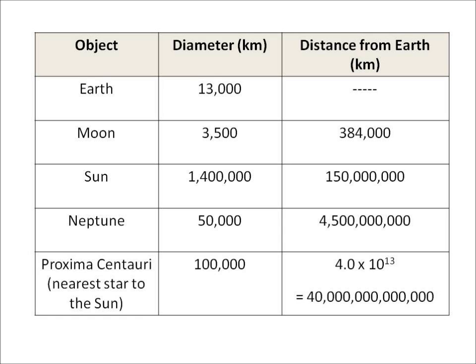We can see that Proxima Centauri is a very long way away from the Earth — it is 4.0 times 10 to the 13 kilometers away. That is in standard form, so when you see 10 to the power 13, that means in this case a 4 with 13 zeros after it. So that's a very big number indeed.